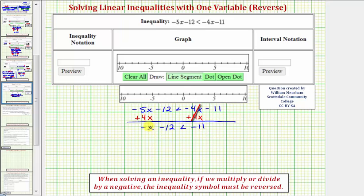And now we want to isolate the x term on the left side. So we want to undo this minus 12, so let's go ahead and add 12 to both sides of the inequality.